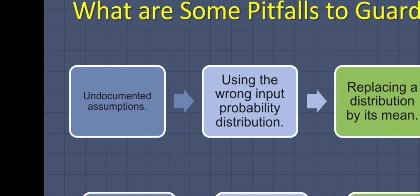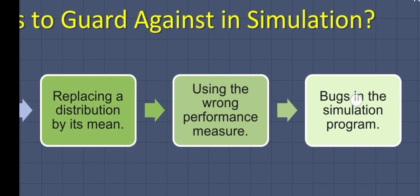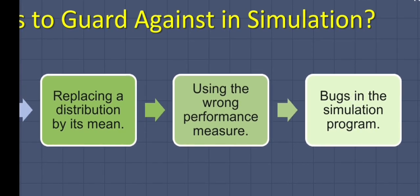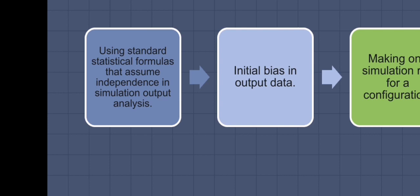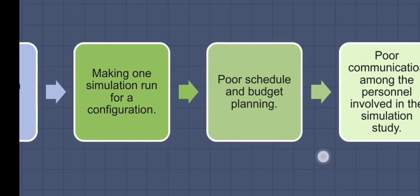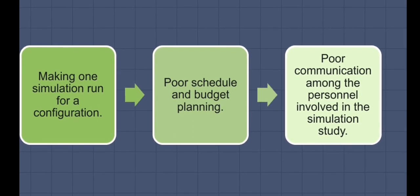Further pitfalls include: using the wrong input probability distribution, replacing a distribution by its mean, using the wrong performance measure, bugs in the simulation program, using standard statistical formulas that assume independence in simulation output analysis, initial bias in output data, making only one simulation run for a configuration, poor schedule and budget planning, and poor communication among the personnel involved in the simulation study.